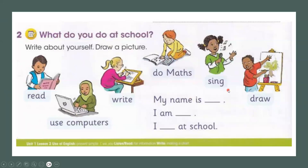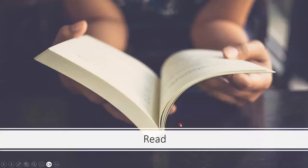My name is ___, I am ___, I ___ at school. You can say: My name is Amira. I am 6. I read at school. I write at school. I sing at school. I draw at school. Something like this.